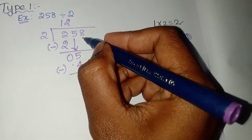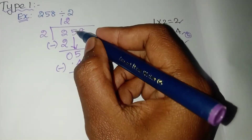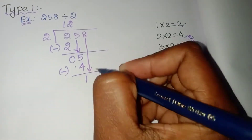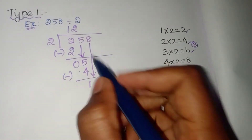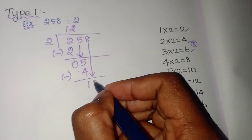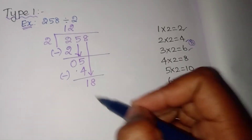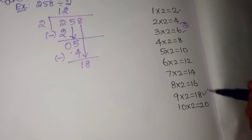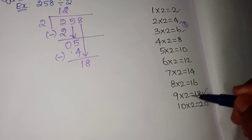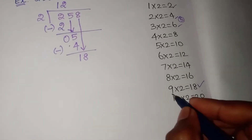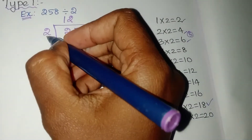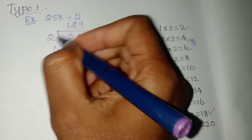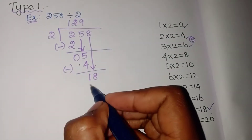What is the next step? You have to bring down the next digit. What is the next number? 8. So you have to check the second table — whether 18 will come in the second table or not. 18 directly comes. How many 2s are 18? 9 twos are 18. So 2 into 9 — you have to multiply 9 into 2. The answer is 18.